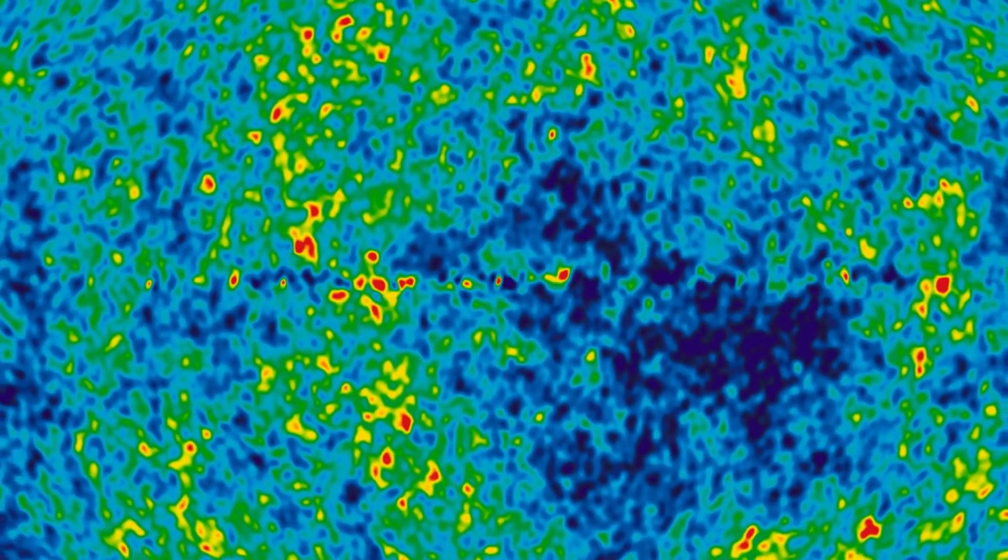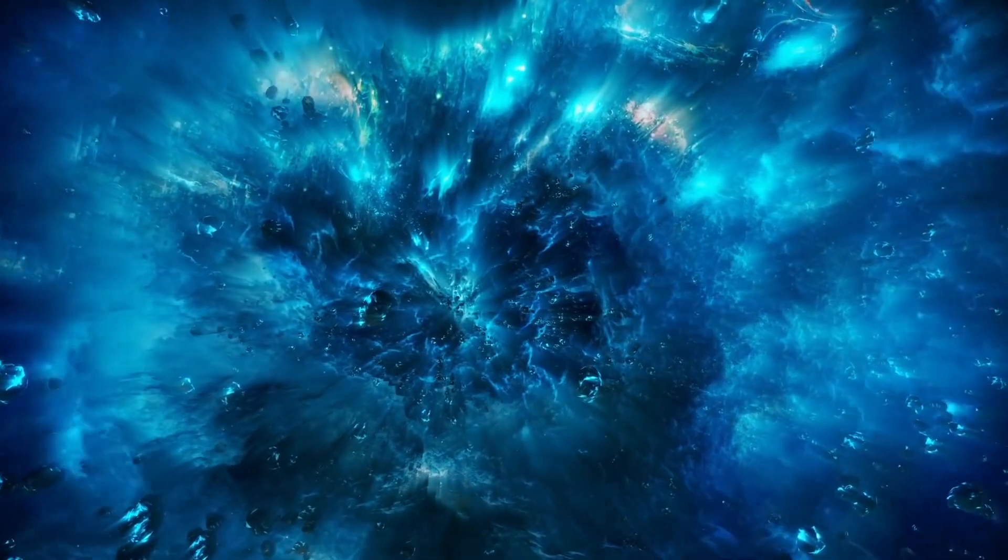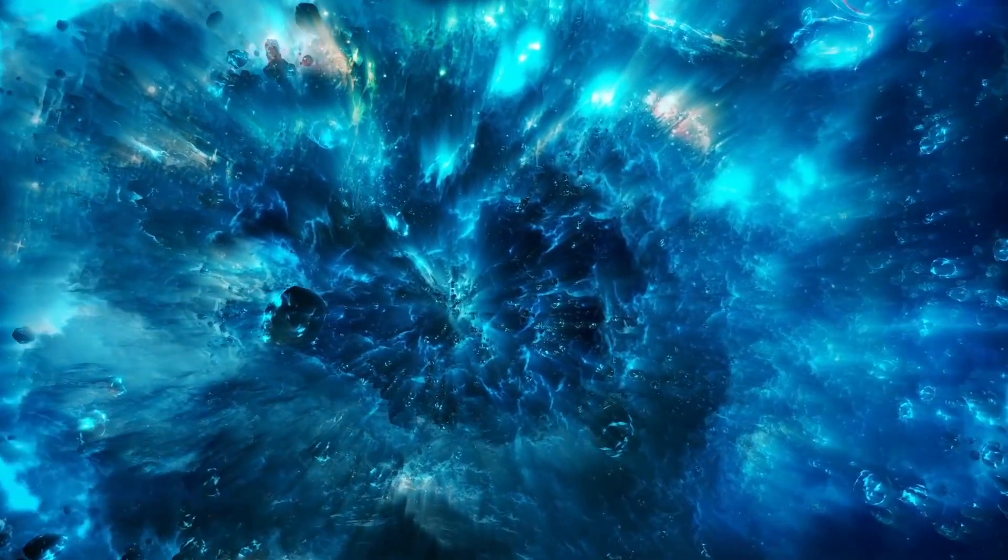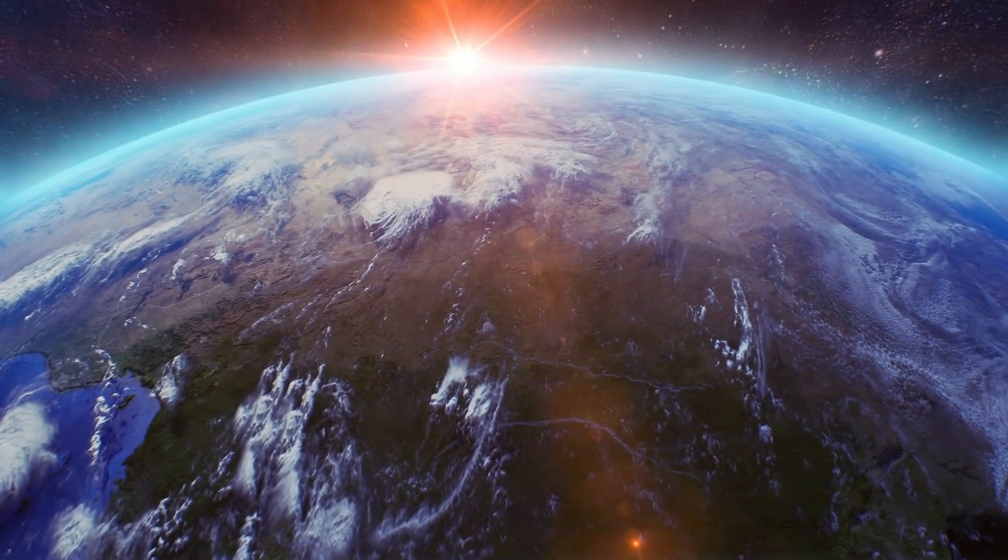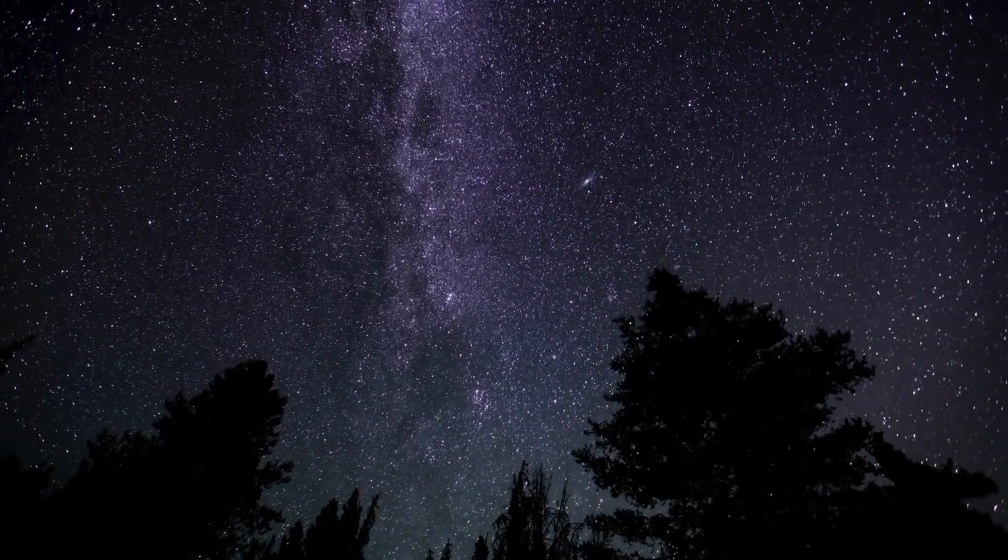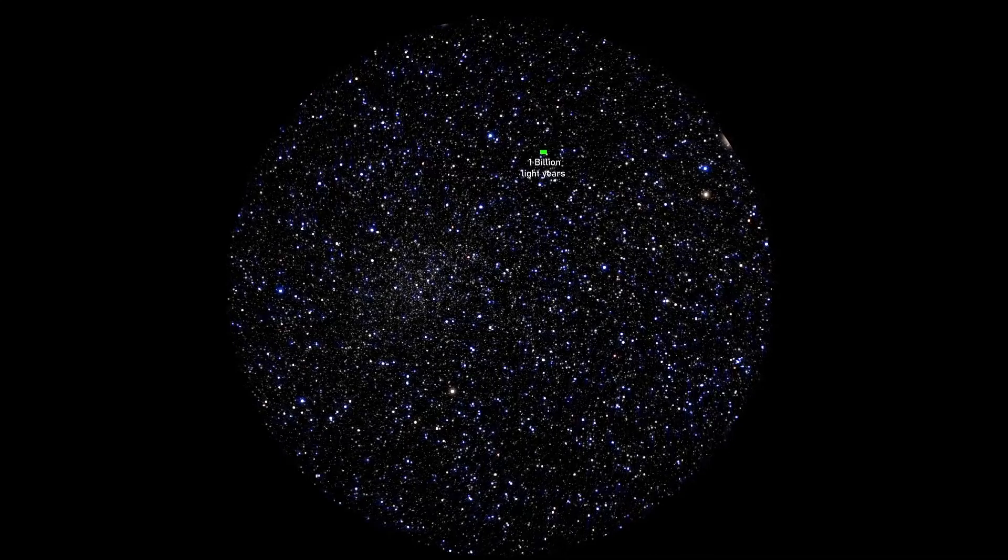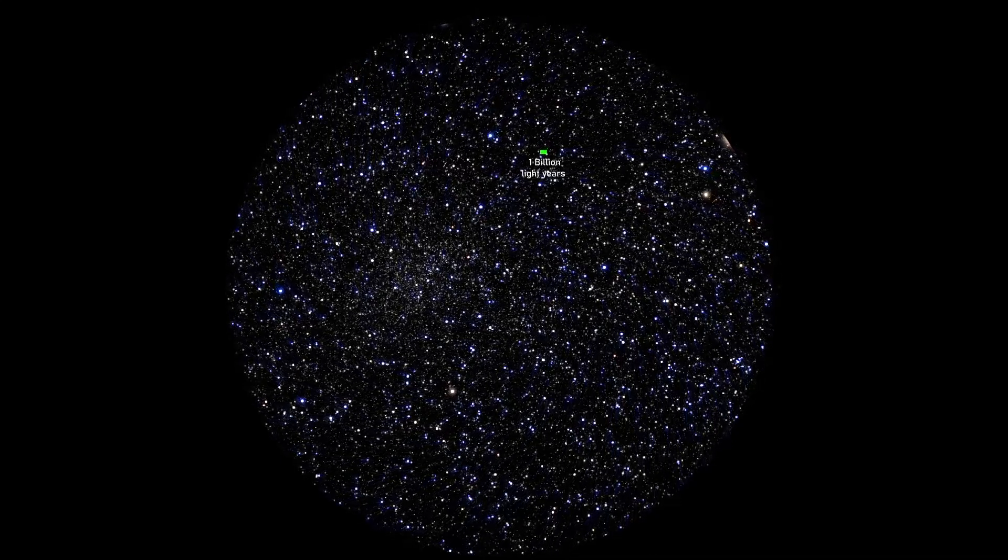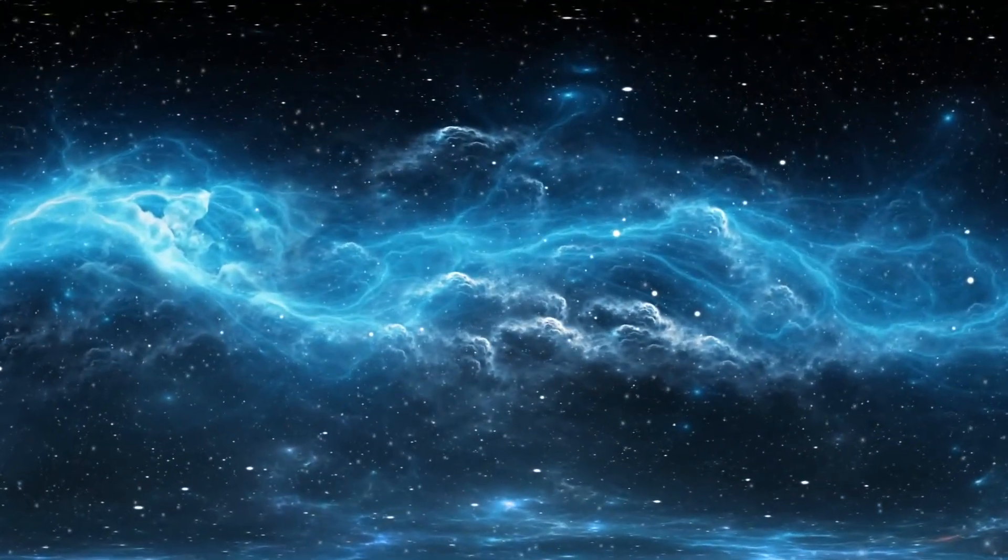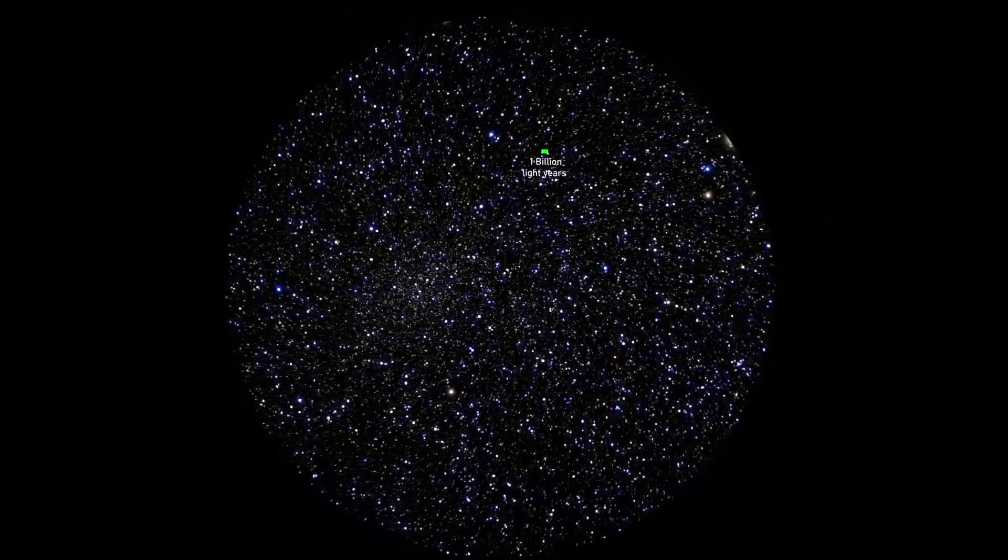Formation of structures in the Big Bang refers to the process by which galaxies, galaxy clusters, and other large-scale cosmic structures came into existence. Tiny density fluctuations in the early universe, imprinted during the period of cosmic inflation, played a crucial role in the formation of structures. These density variations created regions of slightly higher and lower density as the universe continued to expand. Gravity acted on these density fluctuations, causing matter to attract and clump together. Over time, these clumps grew larger and more massive, eventually leading to the formation of structures like galaxies.